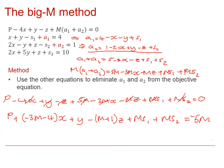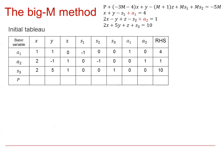Now we are ready to perform the Simplex algorithm. Here is the initial tableau. The constraints are dealt with in the same way, so the first three rows are exactly the same as in the previous video. For the final row: the coefficient of x is minus 3m minus 4, then 1, then minus m minus 1, then s1 is m, s2 is m, the final three elements are 0, and the right-hand side is minus 5m.